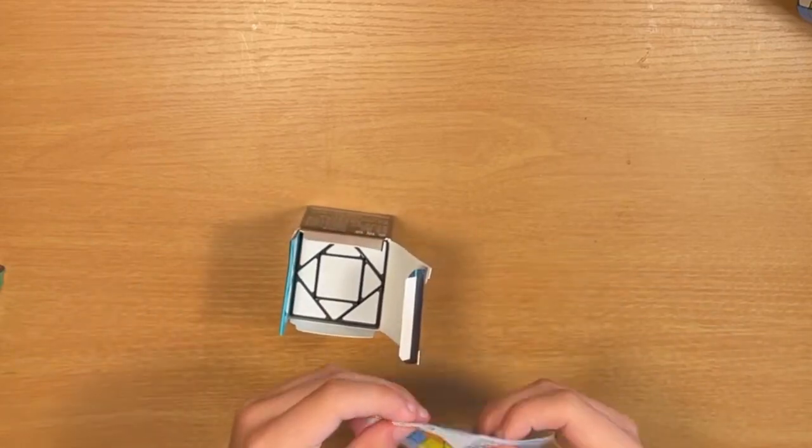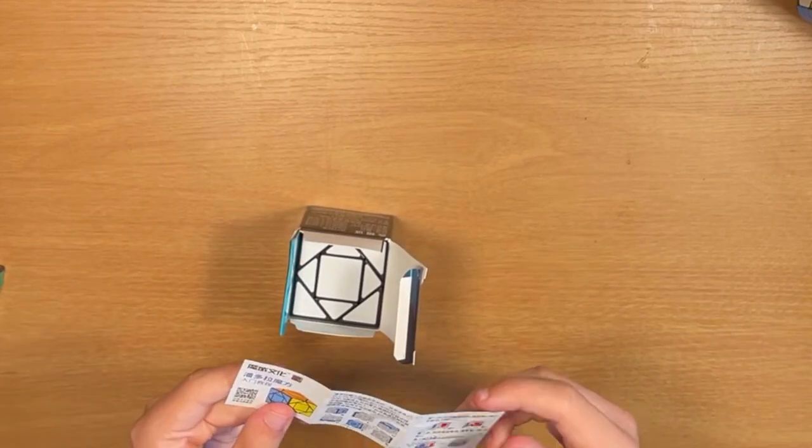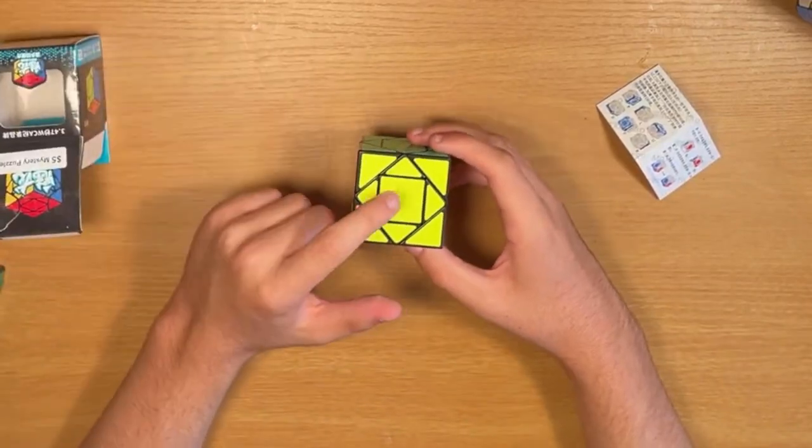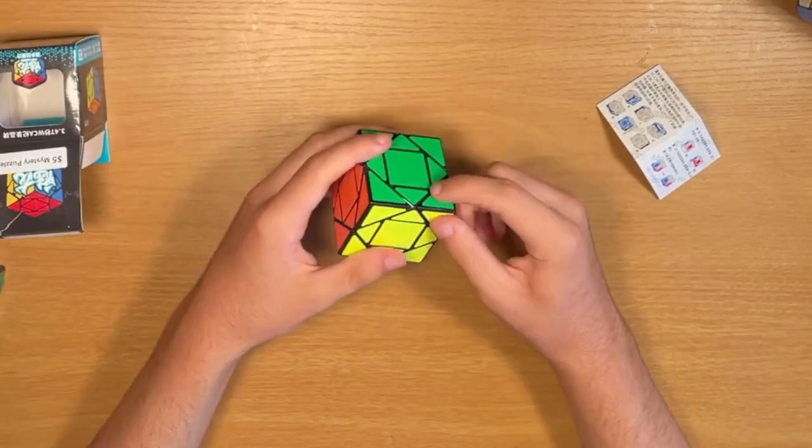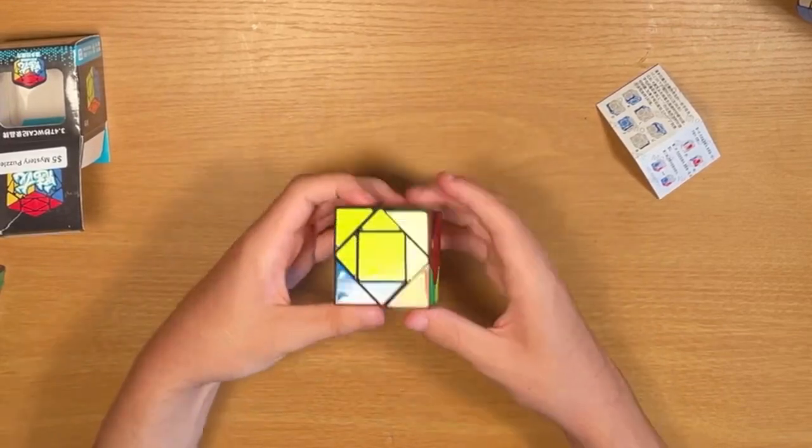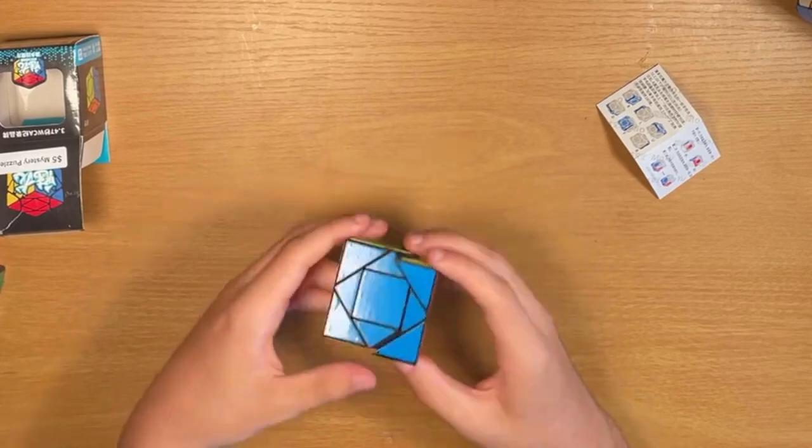This one has a little pamphlet, and I think it's also a 3x3 shape mod. Just the pieces look a little different. For example, this is the center. These are the edges, and then the big pieces here are the corners. And let's turn it. Oh, and this actually turns really nice. I didn't expect it to be this nice.